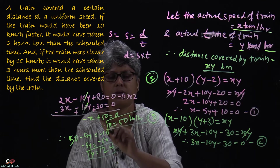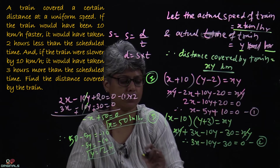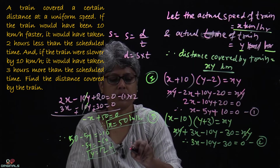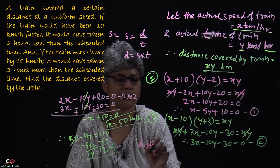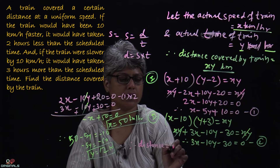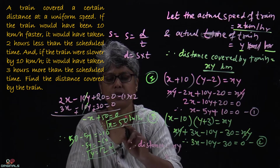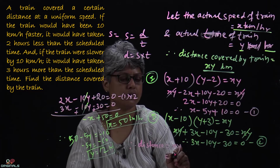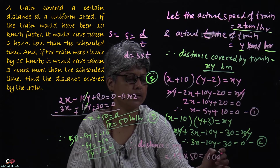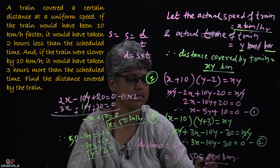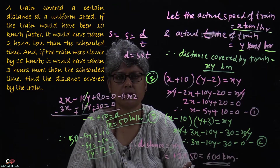We have x equal to 50 and y equal to 12. We need to find the distance. Therefore, distance equal to x into y, that is 12 into 50, which is equal to 600 km. This is the answer — that is the distance covered.